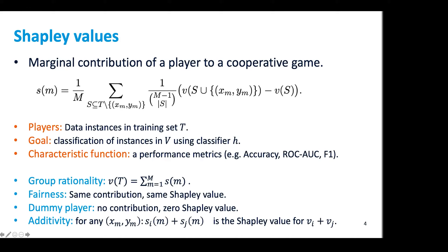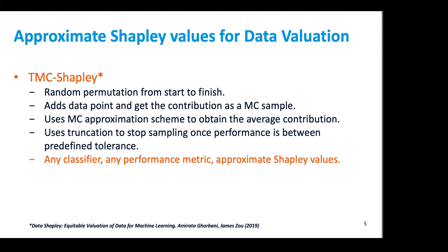To get a proper Shapley value for any data instance, we have to calculate all permutations or subsets of the players — in this case, the training set. This makes it quite difficult to compute efficiently because we have exponential complexity to find all possible permutations.